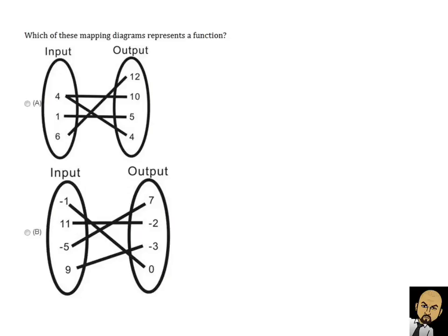A mapping diagram is used to represent relationships between the inputs and the output values. How do we know which mapping diagram represents a function? We have to take a look at each input value and make sure it is only paired with one output. If that is the case, it is a function.